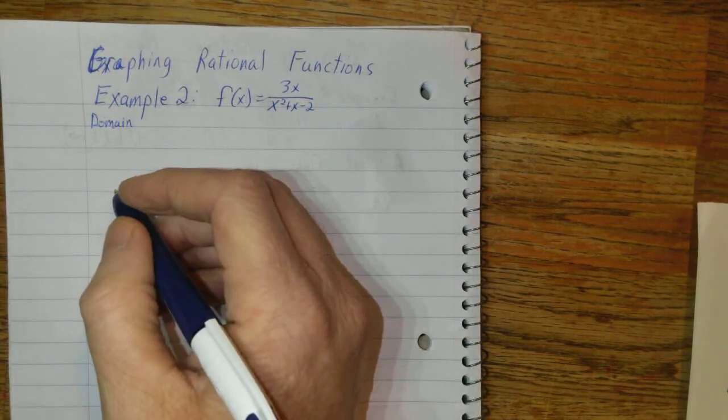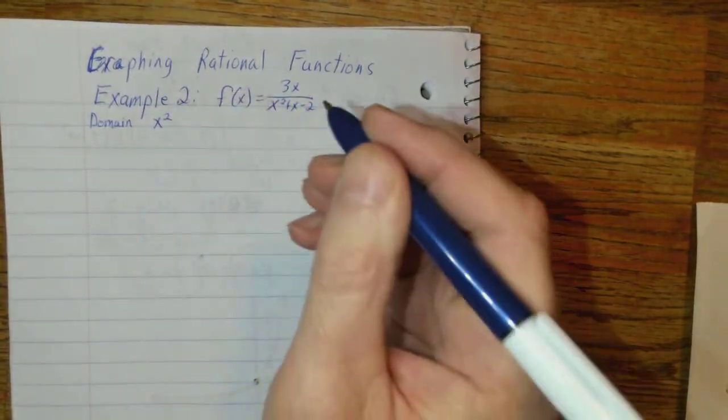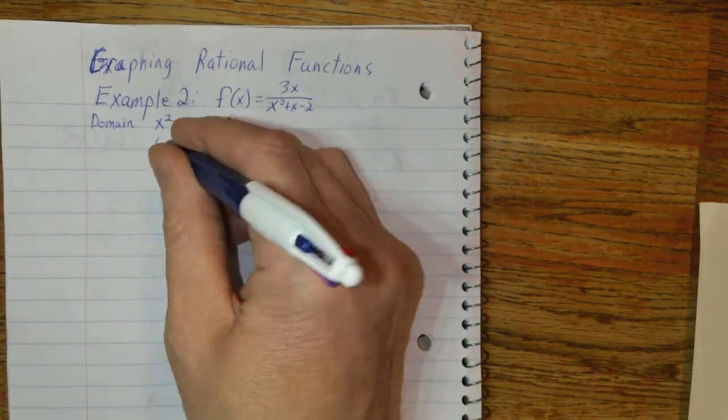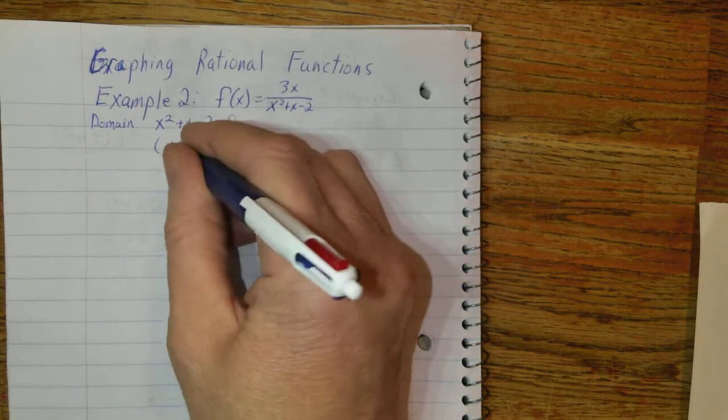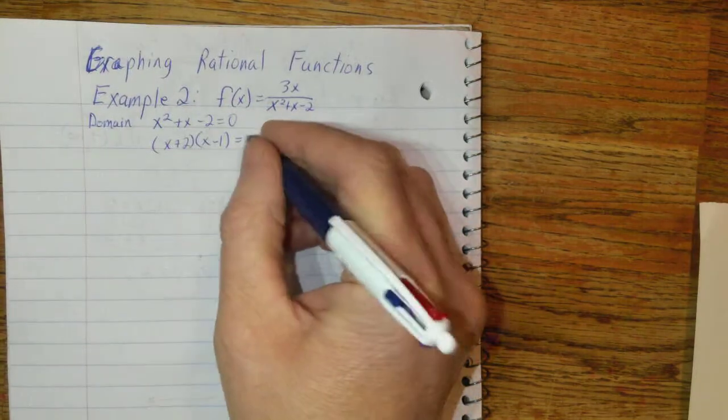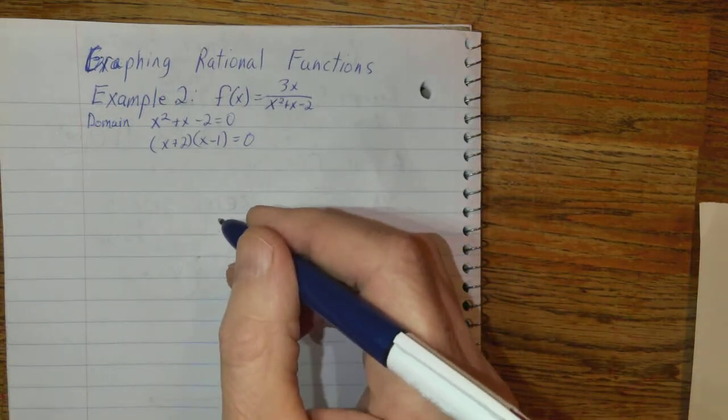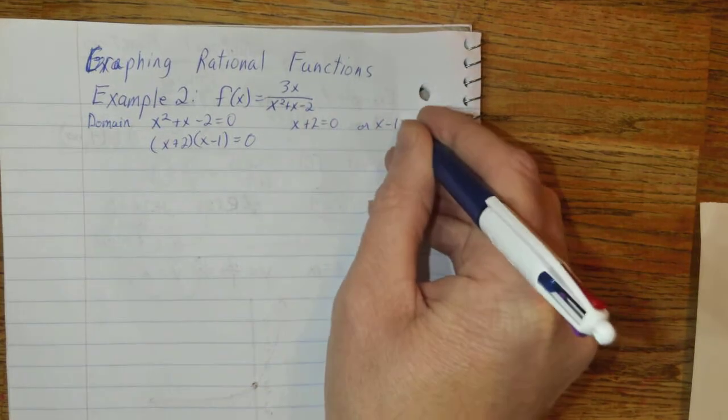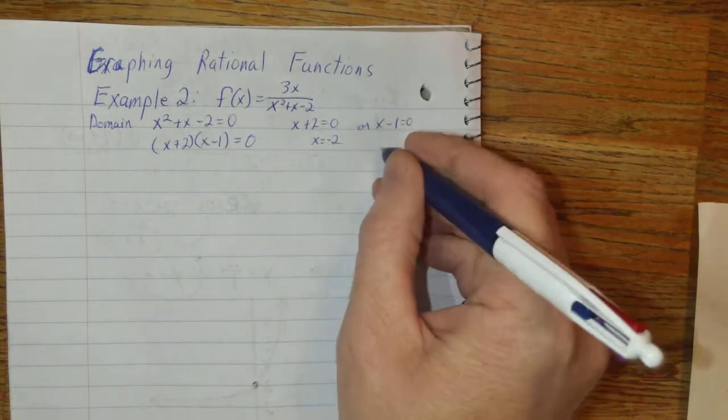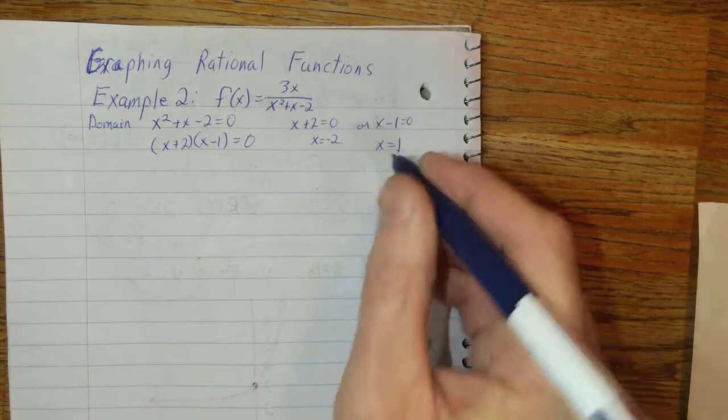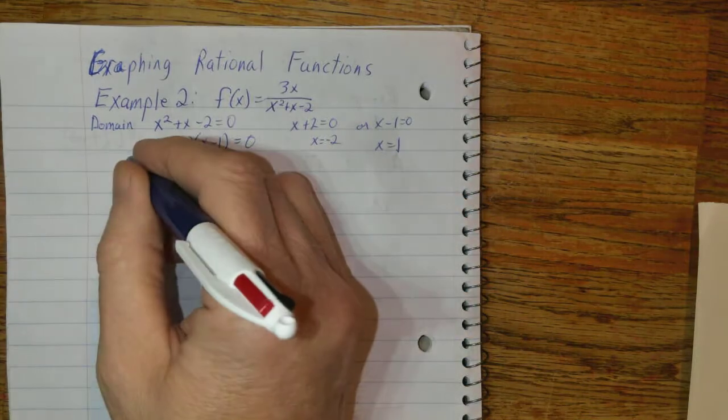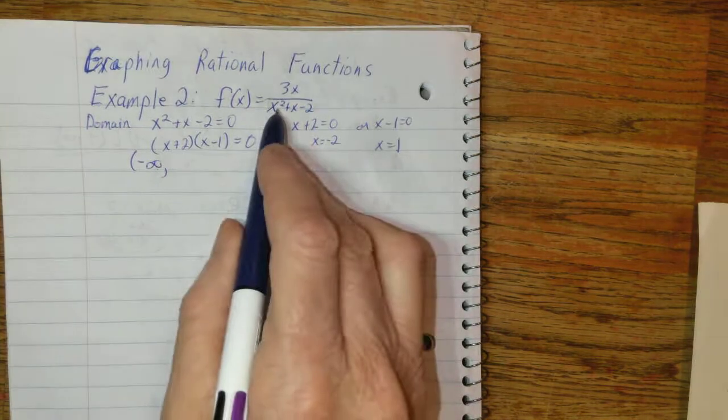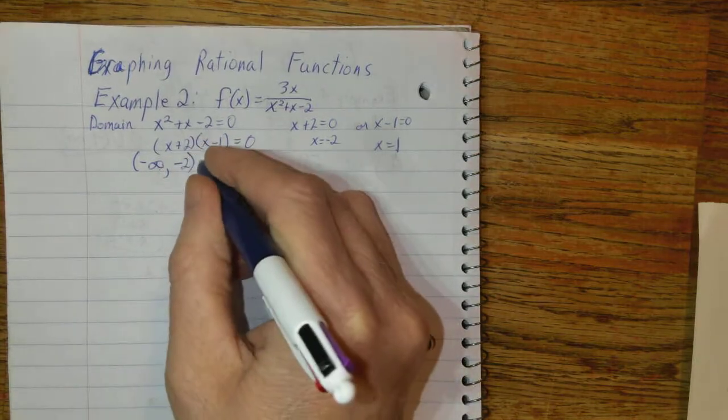Alright, well the domain, let's set the denominator x squared plus x minus 2 equal to 0. This does actually factor. If I go plus 2 and minus 1, that's going to equal that. And if I set each part equal to 0, x plus 2 equal to 0, and x minus 1 equal to 0, I'll get x equals negative 2, and I'll get x equals 1.